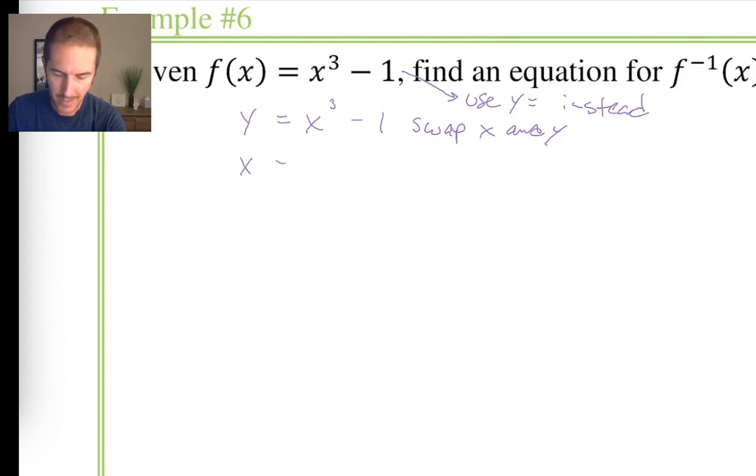So I call it swapping x and y. So let's do that. I'm going to write this as x equals y to the third minus one. And you can see that they literally just traded places. Everything else remains where it was. And now I'm going to perform a series of steps that have a particular goal in mind. And the goal is to solve for y. I want to get y all alone on the right-hand side of the equation.